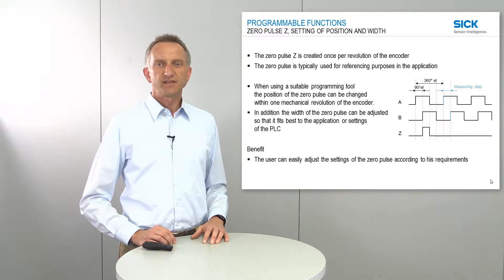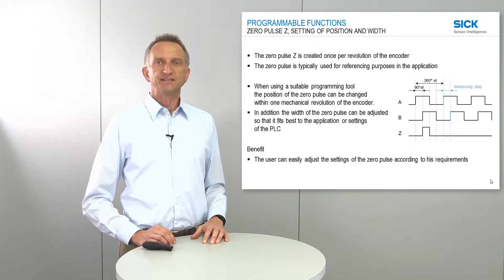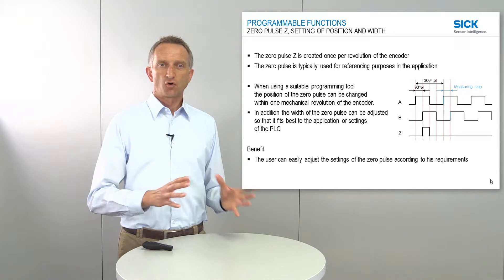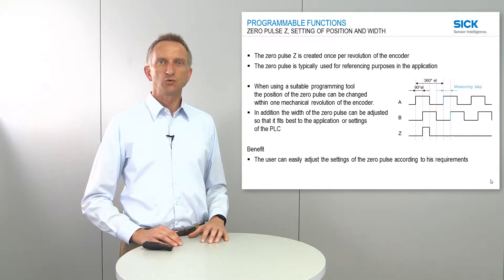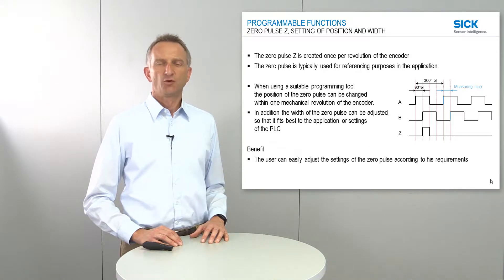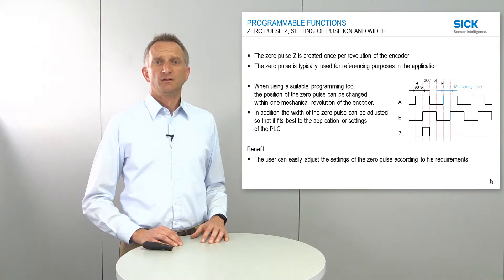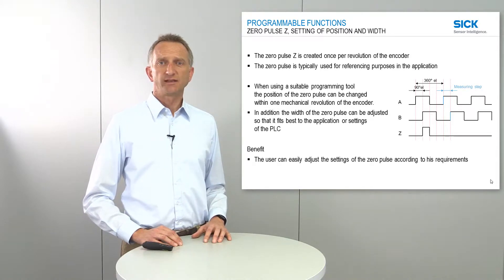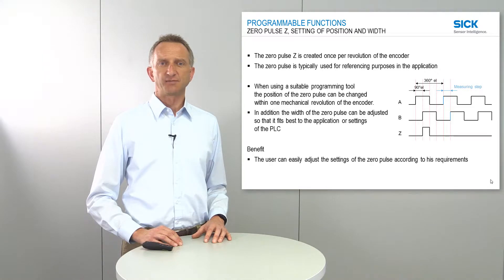Another very interesting and important programmable function is the use of so-called reference values or reference positions. For incremental encoders, this reference is normally created by the so-called zero-pulse Z, which is created once per revolution. This zero-pulse on incremental encoders is typically used for referencing purposes in the application.